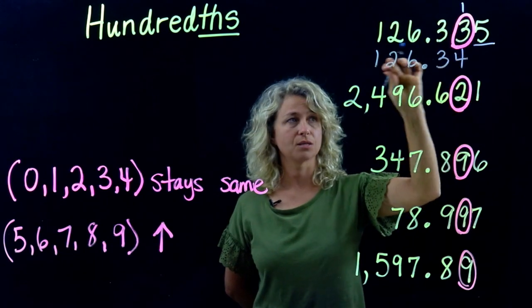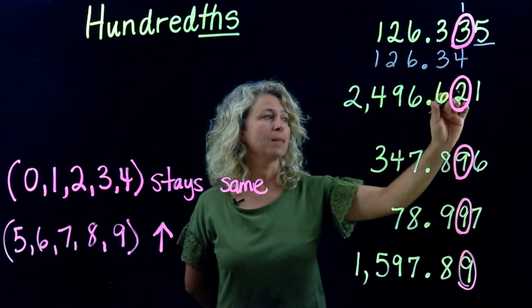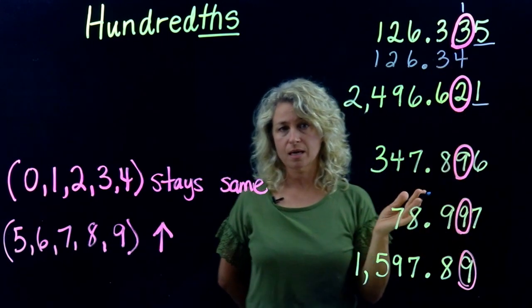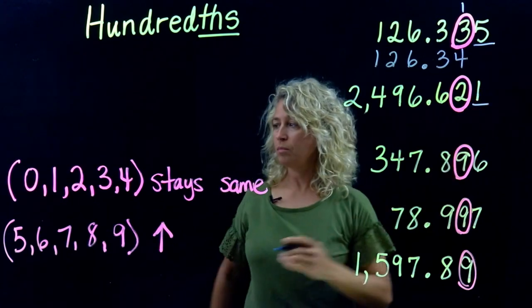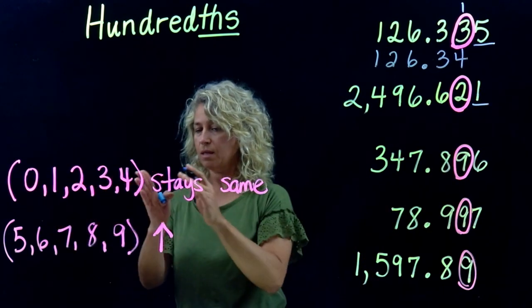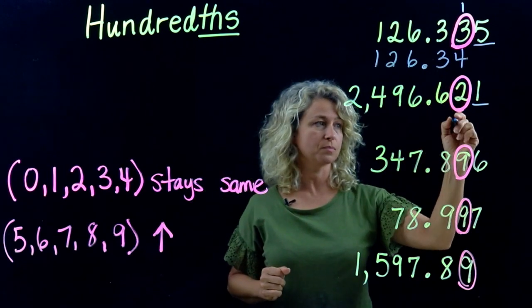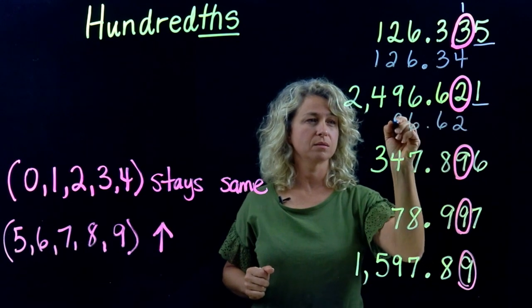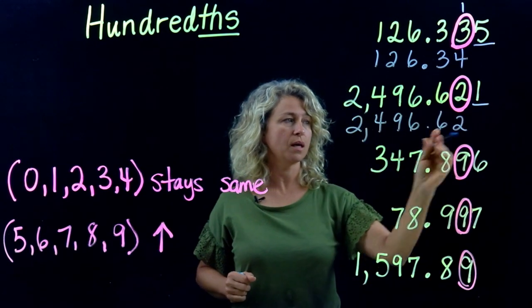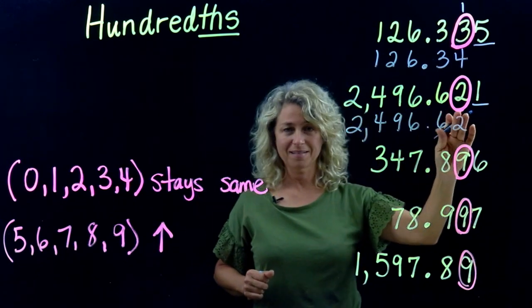Your answer is 126.34 hundredths. Okay, take a look at the next example. One is the number you're using to compare. It's in this list, so we know that this number will stay the same. Bring it down, bring the other numbers down, do nothing to them, and we rounded to the hundredths place.